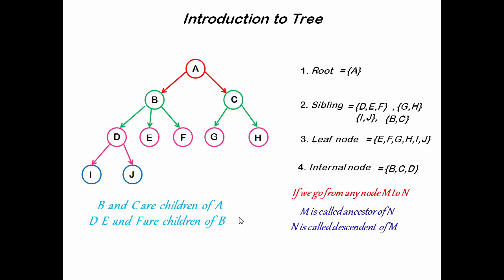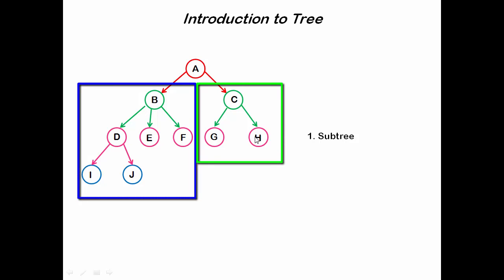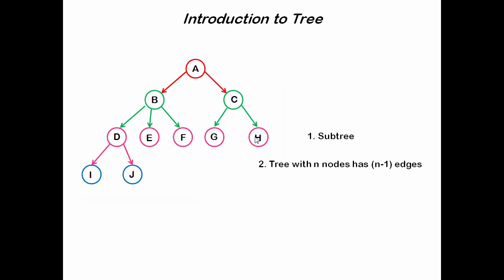Okay, next we will learn some properties of tree. We know a tree is a nonlinear data structure which has a distinguished node called root and all the remaining nodes form disjoint subtrees. For this example, A is root and the remaining nodes form two subtrees. This is called left subtree and this is called right subtree. Number two is a tree with N nodes has N minus one edges.